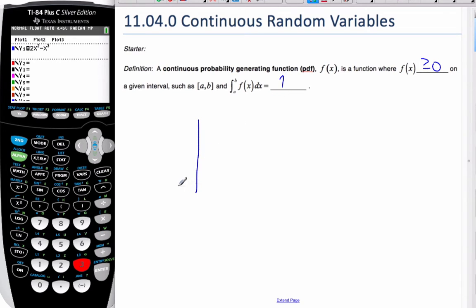So that means if I have some integral from a to b, some function as such, this area here, it must always be positive above the curve, and this area has to equal to one. That's what a continuous probability generated function is all about.